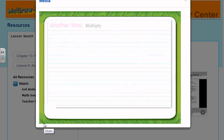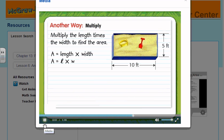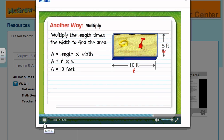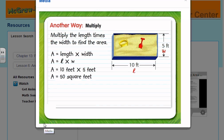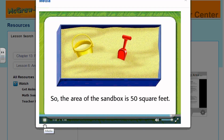Another way to find the area is to multiply. Multiply the length times the width to find the area. The length of the sandbox is 10 feet. The width is equal to 5 feet. 10 feet times 5 feet equals 50 square feet. So the area of the sandbox is 50 square feet.